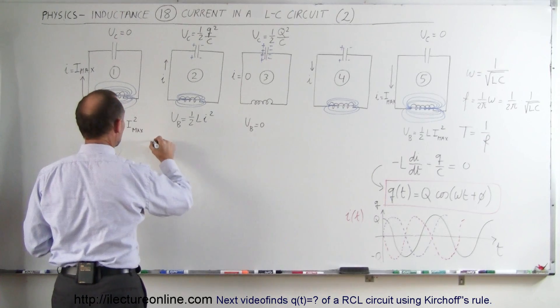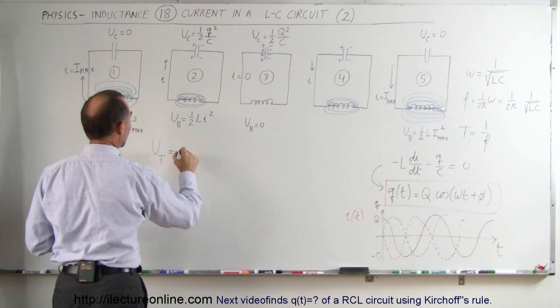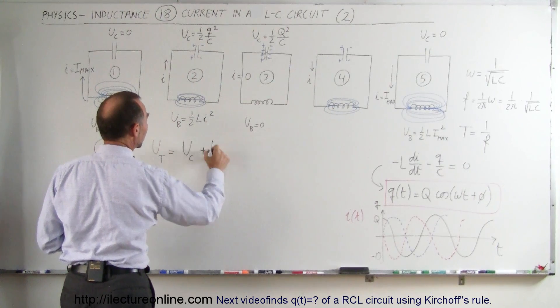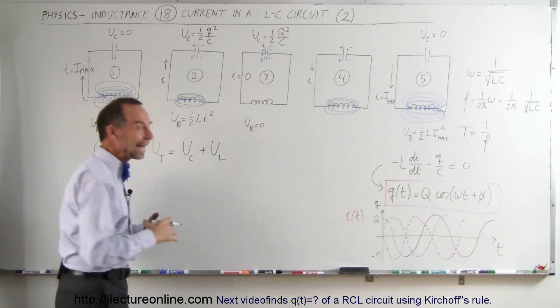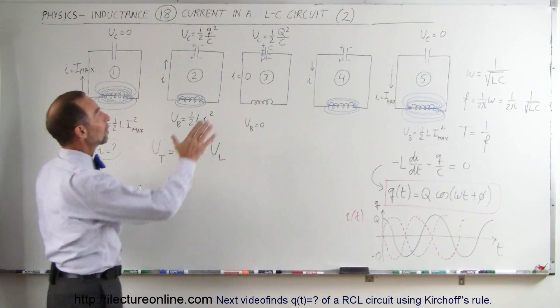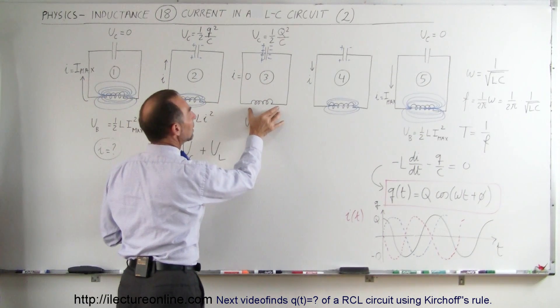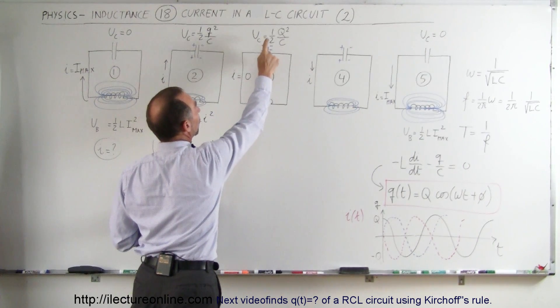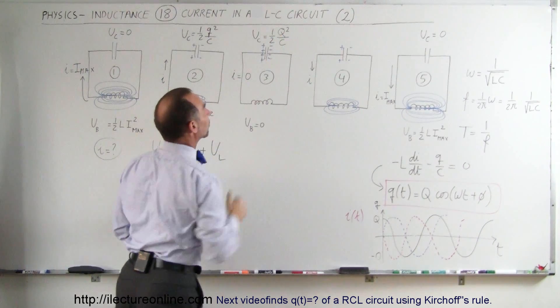In other words, we can say that the total energy in the circuit is always going to be equal to the energy contained within the capacitor plus the energy contained within the inductor at any point in time. So if we start out with this situation right here where there's no energy in the inductor and all the energy is across the capacitor, it will be equal to one half total charge squared divided by C.